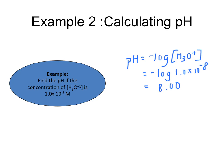You might be wondering why I put a double zero on the end. Significant figures in logs are a little different than normal numbers. Because the hydrogen ion concentration has two sig figs, we always make sure that the pH value has two sig figs to the right of the decimal point — in this case, zero zero.